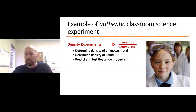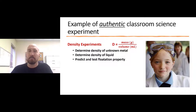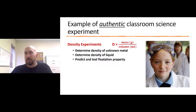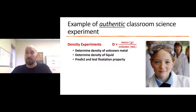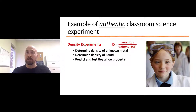Another common approach is figuring out how to determine the density of a liquid, which can be challenging — how do you measure the mass of the liquid? Another common traditional density experiment may be determining the relationship of flotation with respect to density: if you place a substance in a liquid, whether it floats, sinks, or is suspended is relevant to the density comparison. These are all examples of authentic real classroom experiments where students are working with real materials and taking their own measurements.